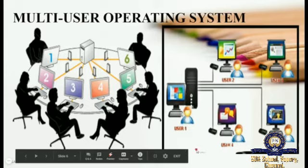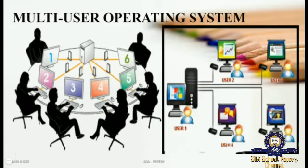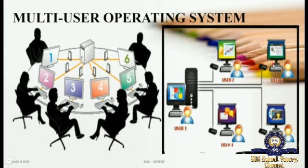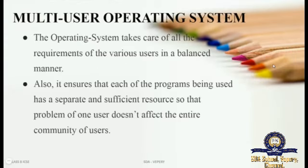Multiple persons can use the resource at a time. Users one, two, three, four, and five are all using only one particular resource. The owner gives access to all persons to perform their task. Multi-user operating system is different from single user - multiple persons are utilizing the system and doing multiple tasks at the same time. That is called multi-user operating system.